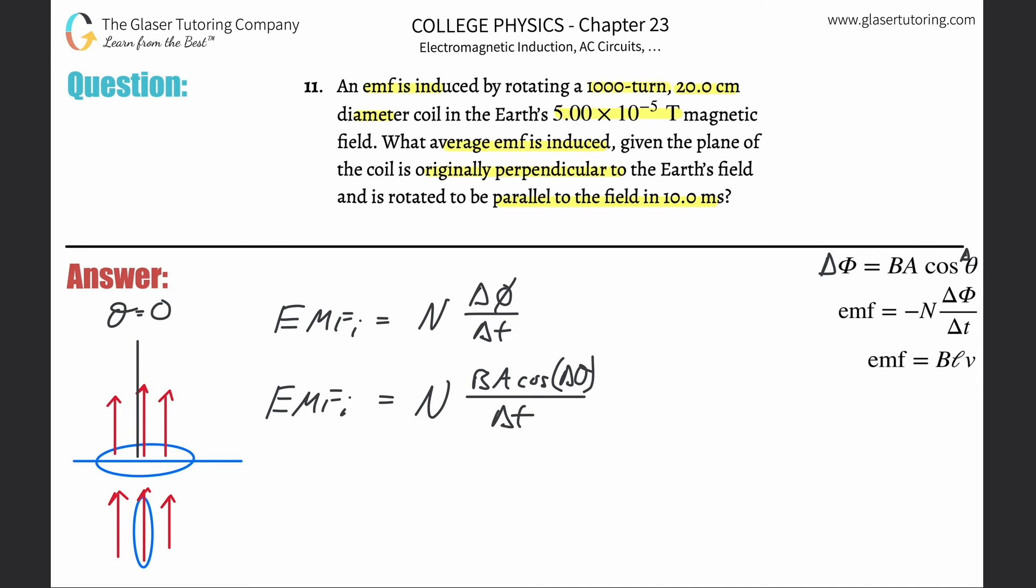But now the normal here is pointing to the, let's just say I rotated it 90 degrees clockwise. So now this creates a right angle. So now the theta here is going to be 90.